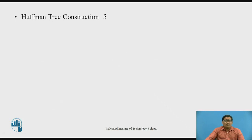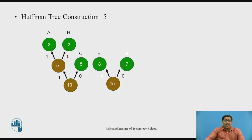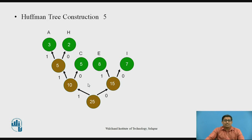In the final Huffman tree construction step, we add all symbols — A, H, C, E, and I — and combine the two subtrees: 10 plus 15 gives 25, which is the root. Then we assign: left is indicated by 1, and right is indicated by 0. In this way, the Huffman tree construction is completed.